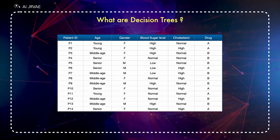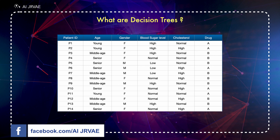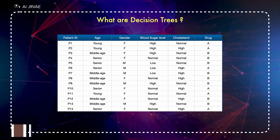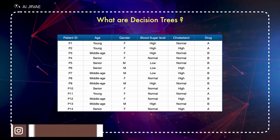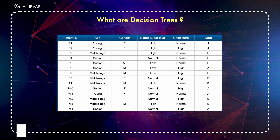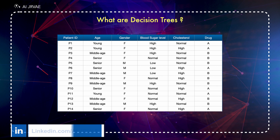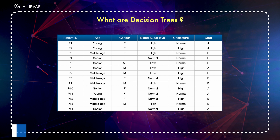Now let's have a look at our dataset which we will use to build a decision tree. This data is about a set of patients, all of whom suffer from the same illness. During their course of treatment, each patient responded to one of two medications, recalled drug A and drug B. Using this dataset, we are going to build a decision tree which helps us to treat the disease when a new patient appears.